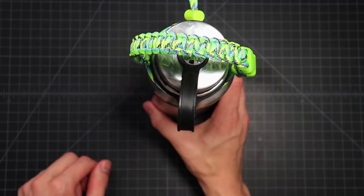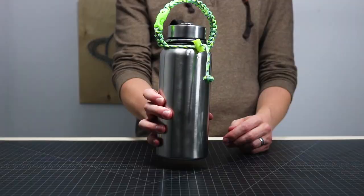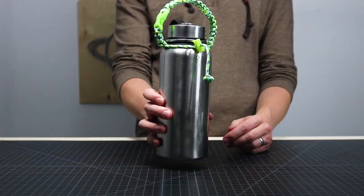Hang it off of your backpack or carry it around easier. We'll put links to all the supplies used, so the paracord, the buckle, the cord lock, down in the description to this video. If you enjoyed it, hit the like button and subscribe if you want to see more. Otherwise, thanks for watching and we'll catch you next time.